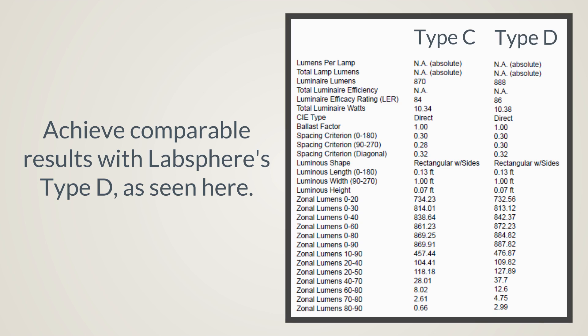So how does Labsphere's Type-D perform in comparison to a Type-C? Several sample luminaires were measured in comparison to Type-C goniophotometers from two separate national testing laboratories. As you can see in the example to the right, comparable performance is measured within the national norm.